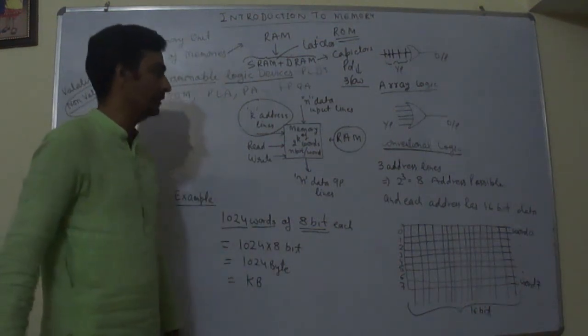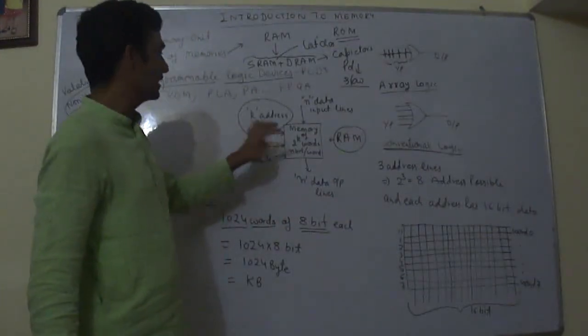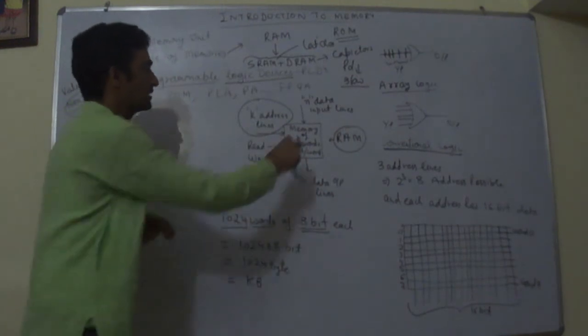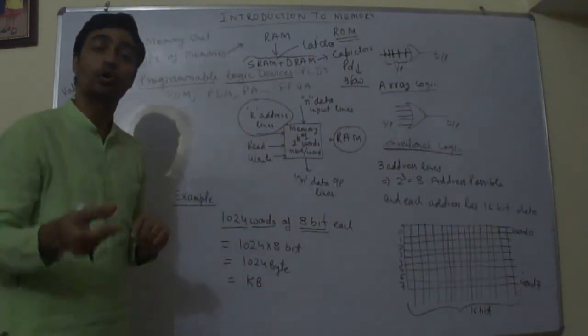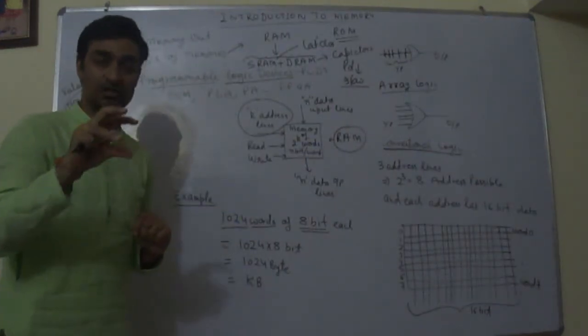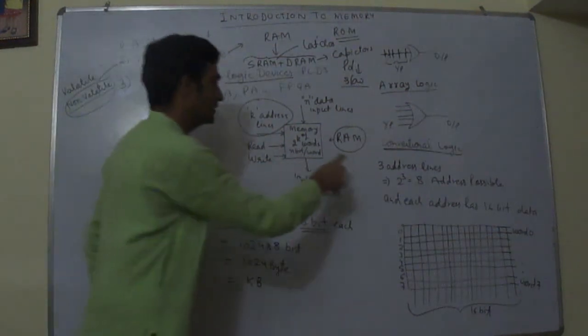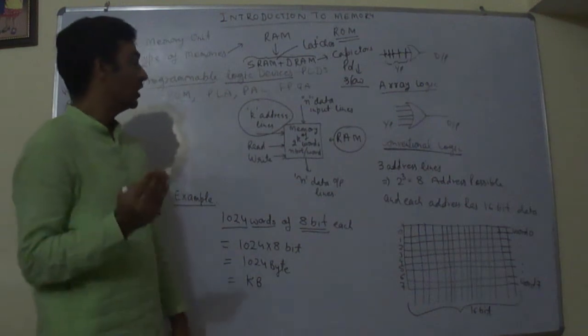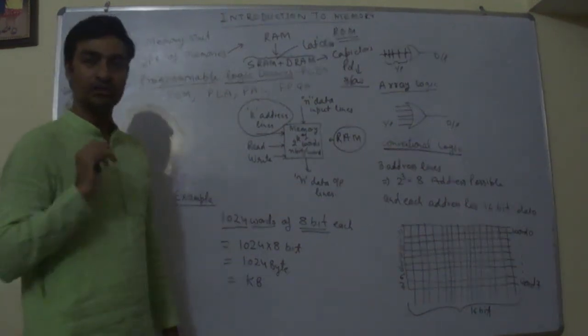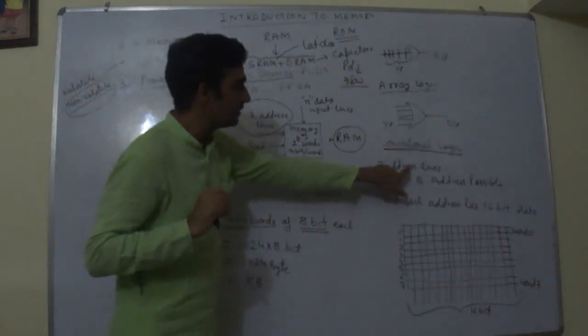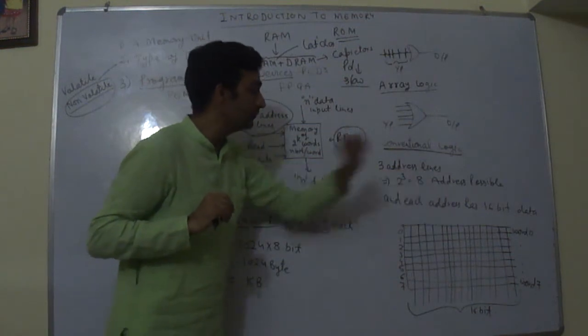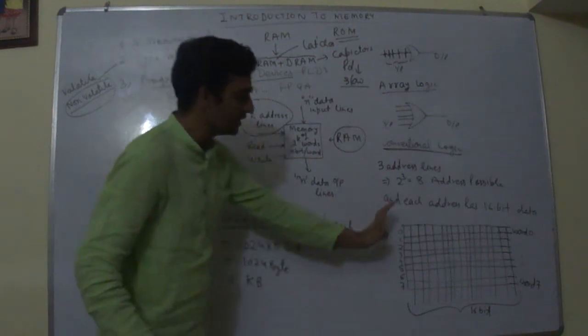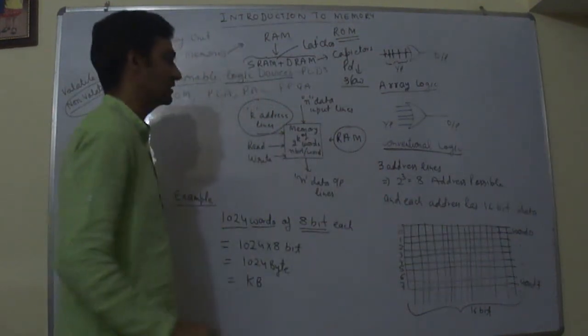Let us take another example. Let us say there are three address lines. We say that depending upon number of address lines, this location from where we want to extract data, that will be larger or small. Let us take an example that we have three address lines. Three address lines can address how many possible memory locations? That is 2 raised to the power 3 is equal to 8 addresses are possible. 8 memory locations are possible. Now let us understand how this memory looks like basically.